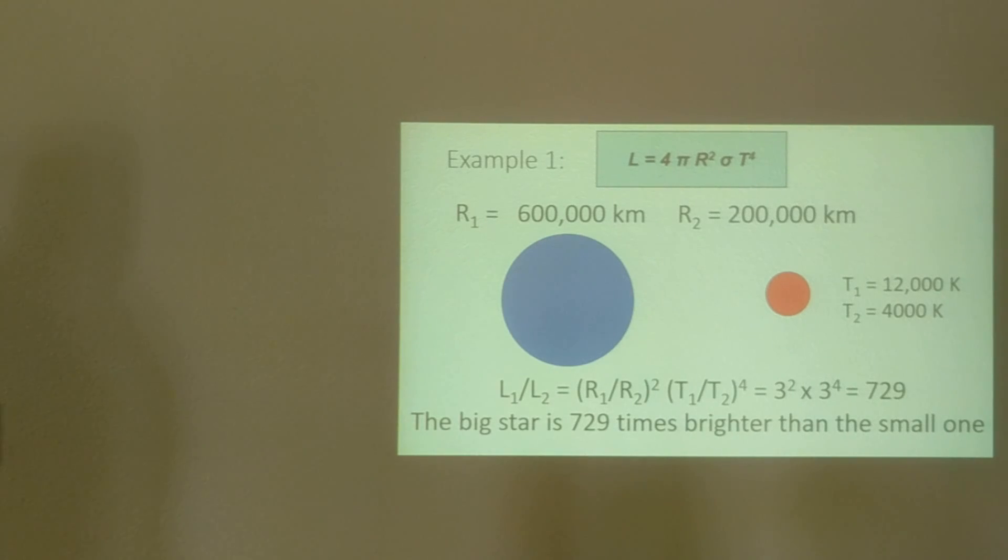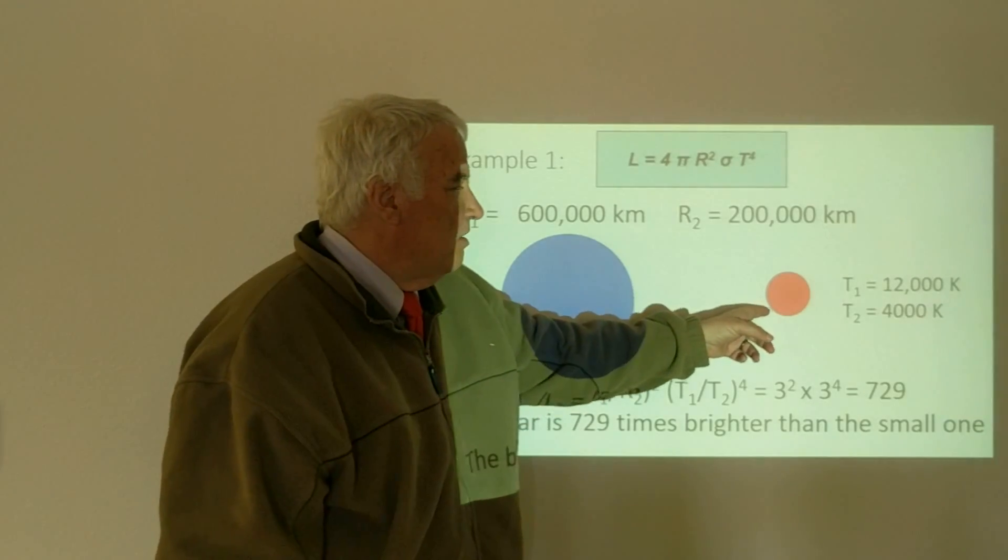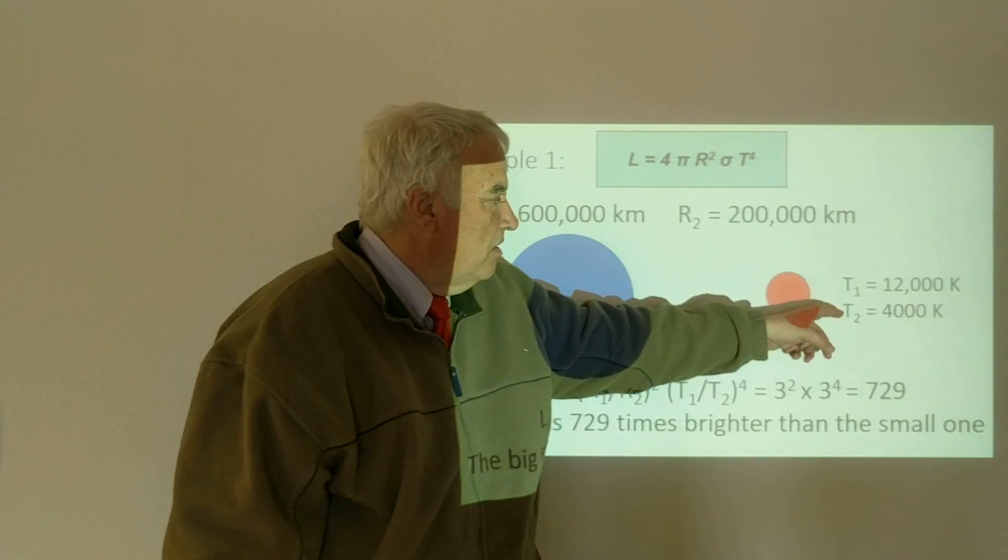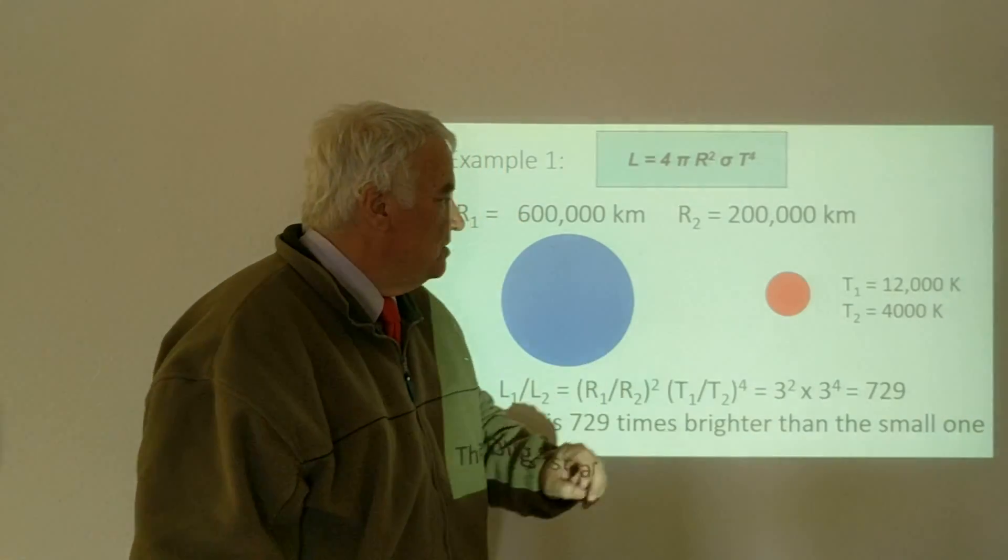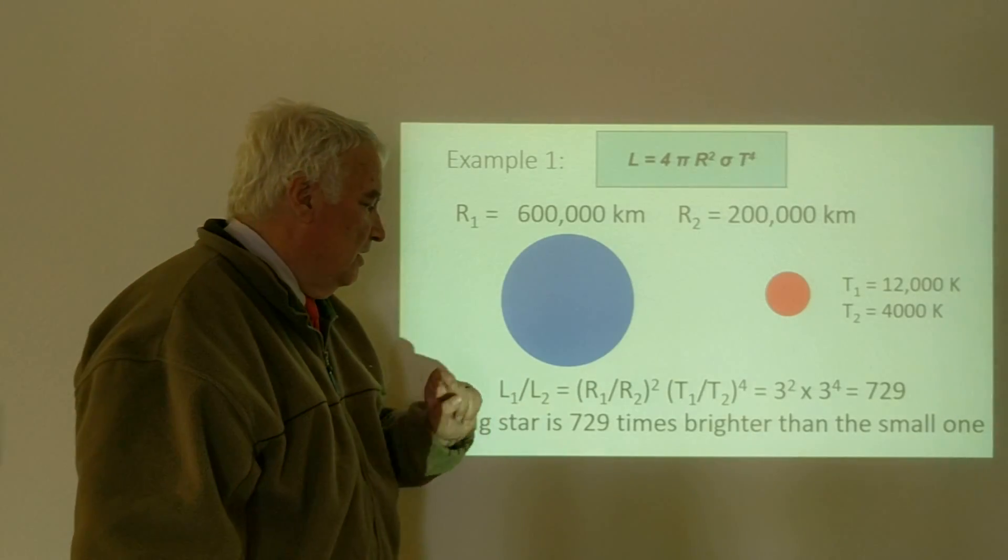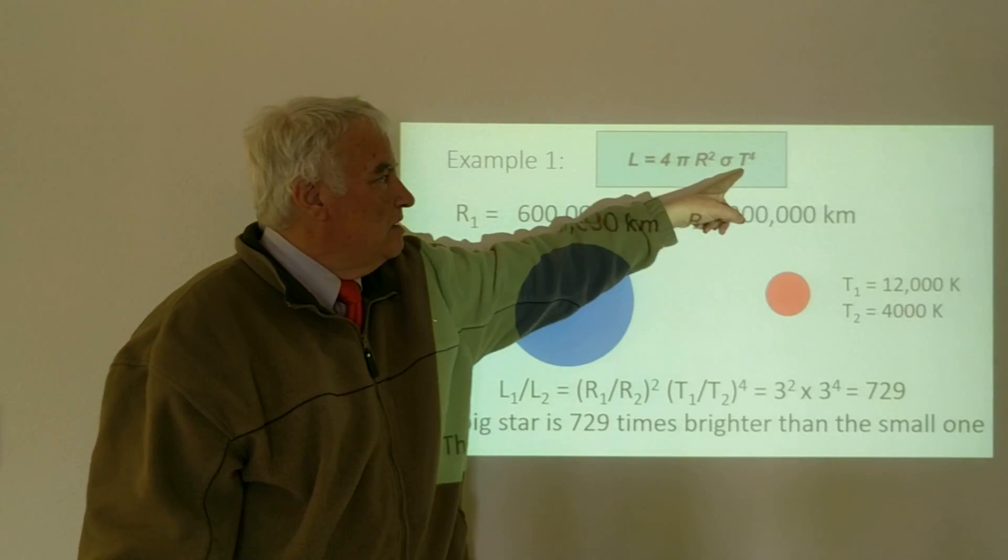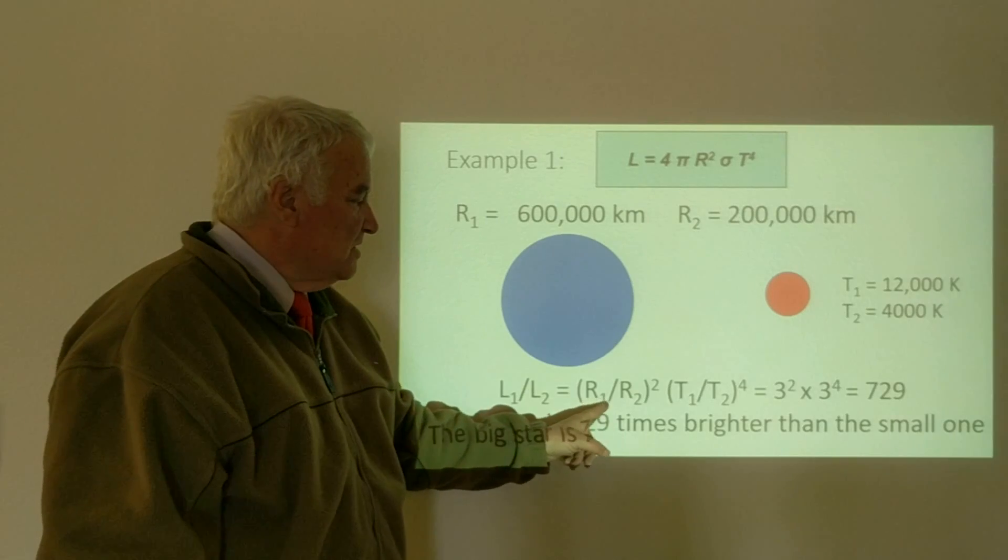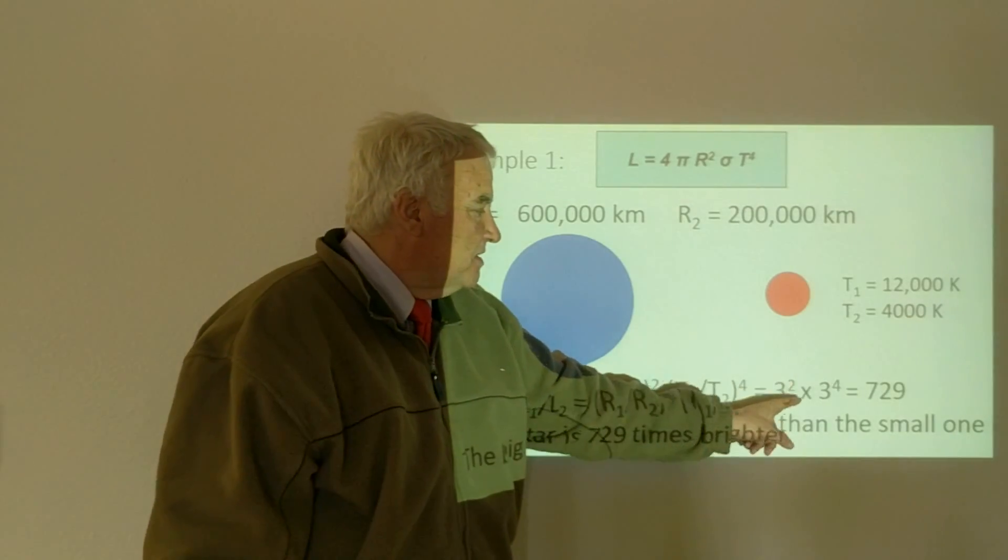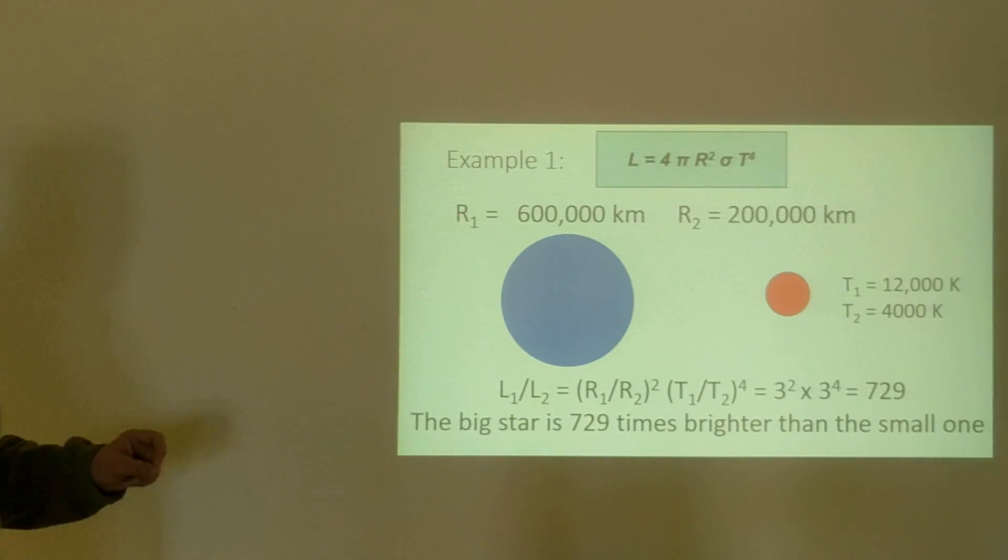Another example: if we consider the blue star here and the red star here, three times hotter T₁ compared to T₂, and in addition the blue star is also three times bigger, so we have to consider the Stefan-Boltzmann law—the radius squared and the temperature to the fourth power. So that's 3² times 3⁴, and that gives us 729. So the big blue star is 729 times brighter than the small one.